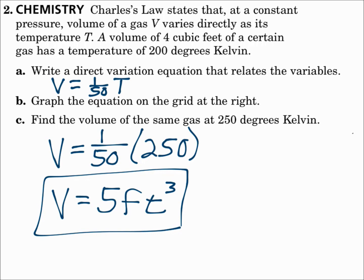Remember, these are all direct variations. y varies directly as x, y equals kx, and k is the constant. When one number equals some number times a third thing, that's direct variation — like total cost equals $5 times the number of shirts, or total cost equals $20 times the number of movies you buy. If it can be written in the form y equals kx, then it's direct variation. The graphs go through the y-intercept at zero, and k is the slope, so you can rise over run to any other point on the line.